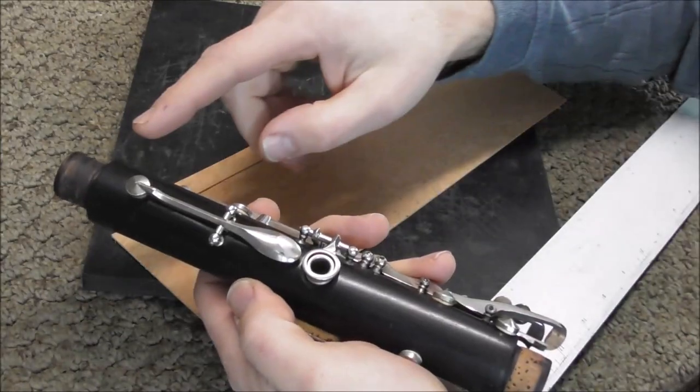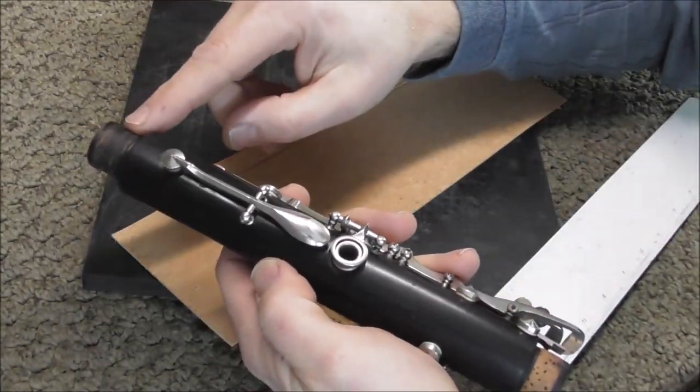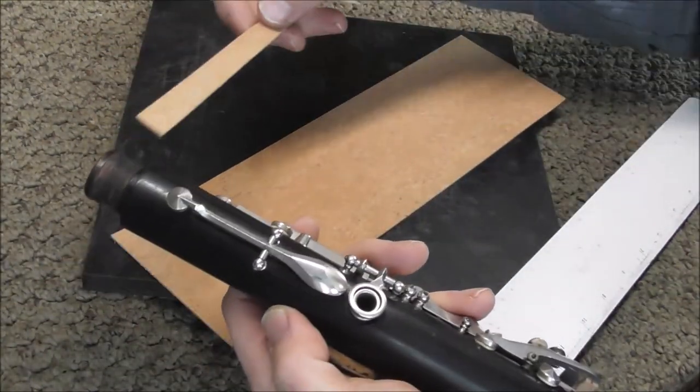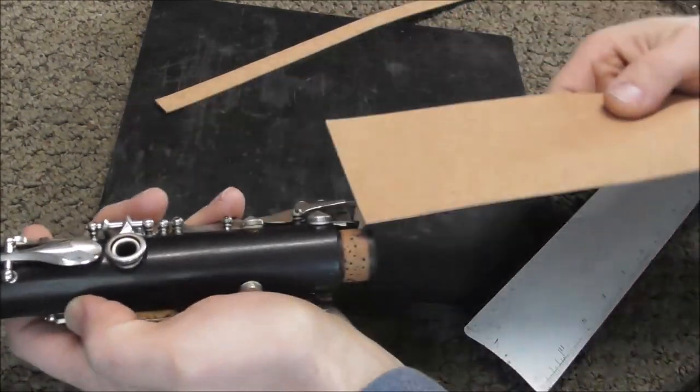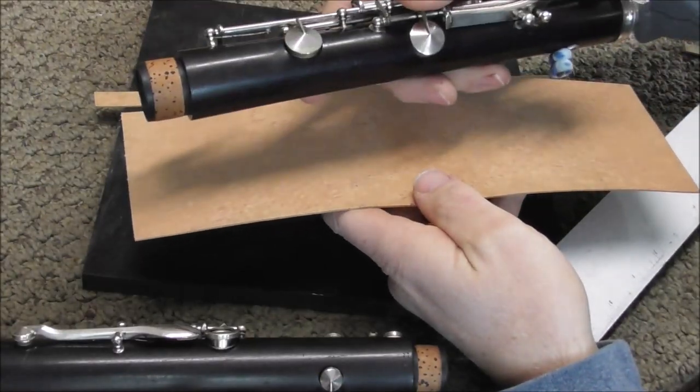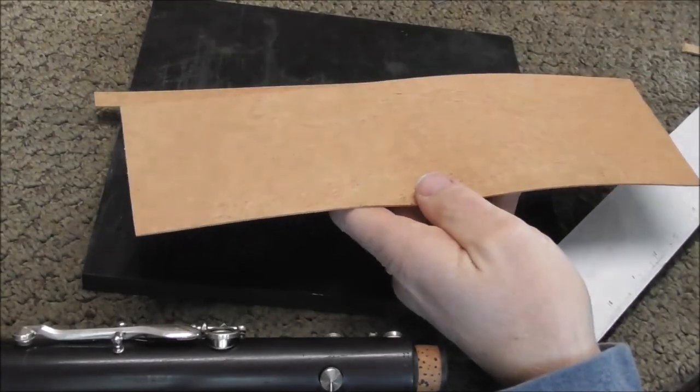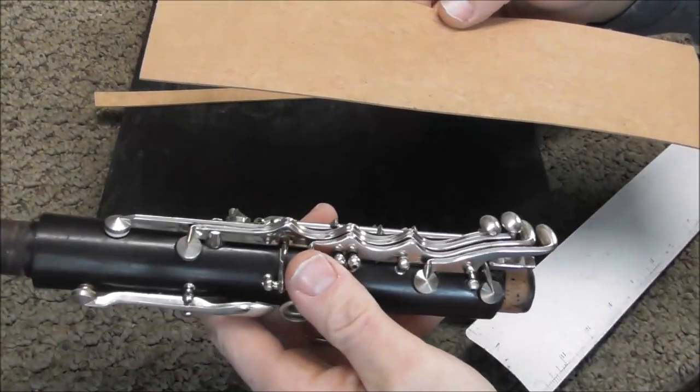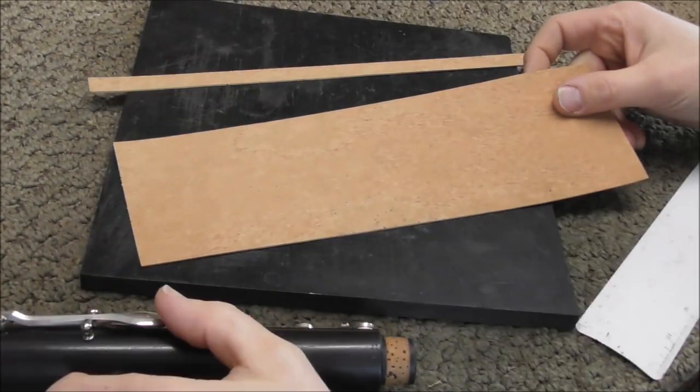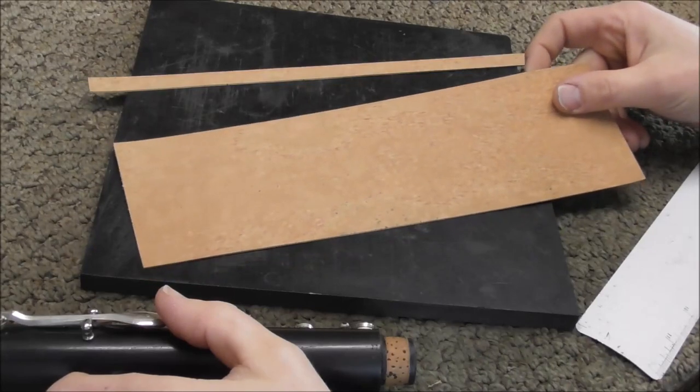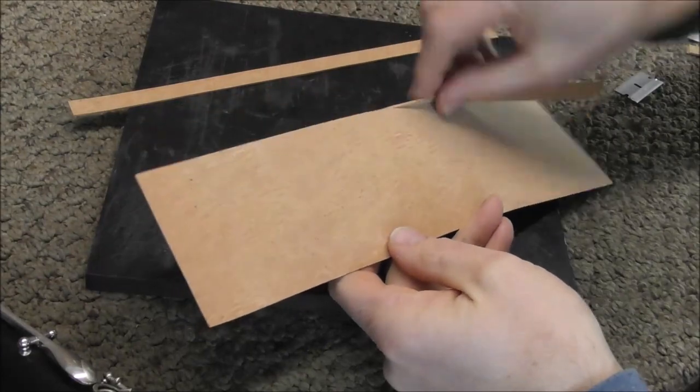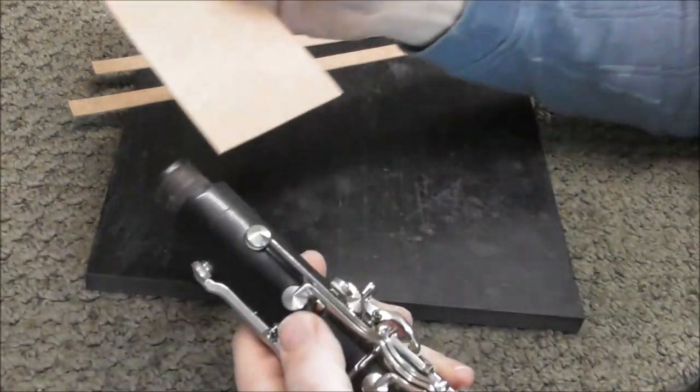This strip will make four tenon joints on the upper tenon or it will make you three on the lower tenon. And also another thing to note is these are usually different widths. Usually the upper tenon takes a wider cork than the lower tenon does. Now that I cut one strip off this is about the perfect width to recork lower tenons, but if you want to recork the upper middle tenons or the mouthpiece you can cut one more strip off and then it will fit that. I usually keep two different sheets of cork around, one to do the lower joints and then another one with two strips cut off to do the upper joints. So now I've cut two strips off and this is the right width to do the upper tenon.